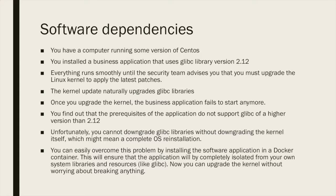You find out that the application's prerequisites do not support glibc of a higher version than 2.12, and since you changed that version to a higher one the application ceases to start. Unfortunately you cannot downgrade glibc libraries without downgrading the kernel itself, which might mean a complete OS reinstallation — a drastic measure. You could have easily overcome this problem by installing the application in a Docker container, which ensures the application is completely isolated from your system's glibc. It's going to use its own glibc version, completely isolated from the underlying OS, provided by the Docker image in the Docker container.